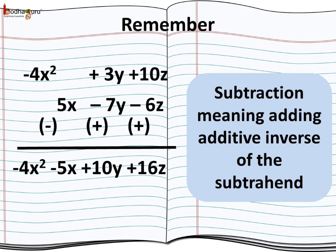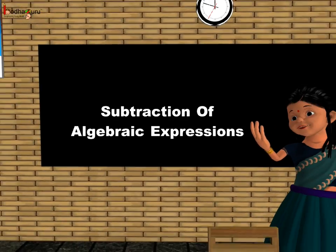Thus, the answer is minus 4x square minus 5x plus 10y plus 16z. So, now you know how to perform subtraction of given algebraic expressions. That's all for now. Bye-bye children.